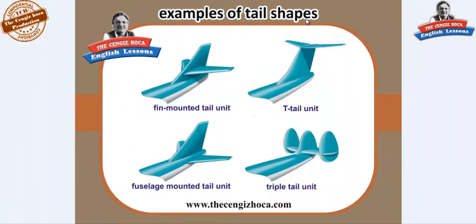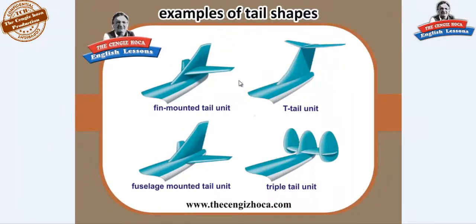Examples of tail shapes: a fin mounted tail unit, a T-tail unit, a fuselage mounted tail unit, or a triple tail unit.